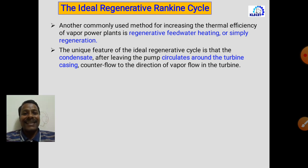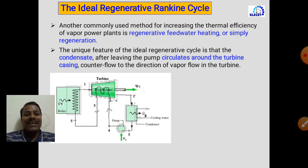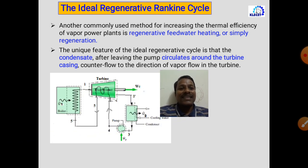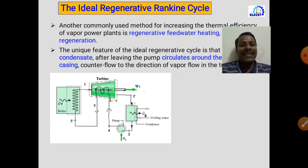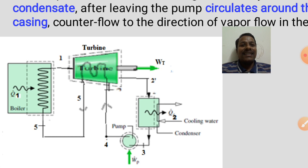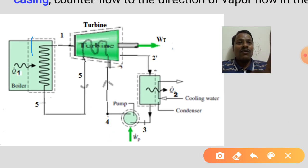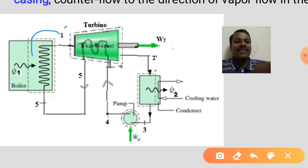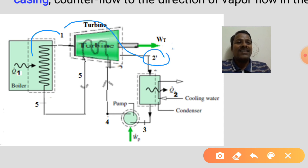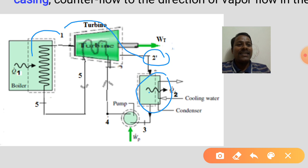Let's look into the schematic diagram for the ideal regenerative Rankine cycle. From the boiler, steam comes out at state 1 and expands inside the steam turbine until state 2'. From 2', it enters the condenser, where it rejects heat energy and gets condensed, coming out at state 3.